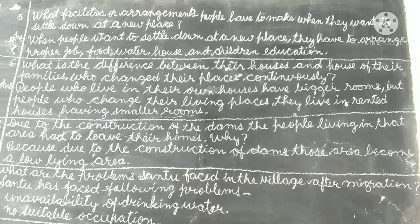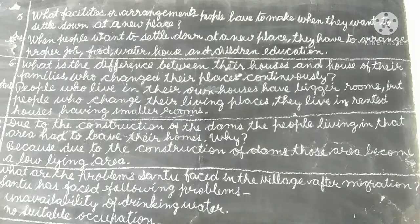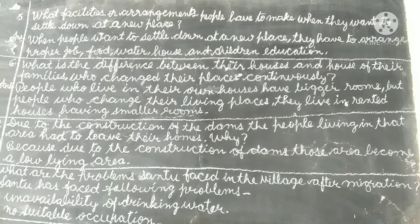Next, question number 5: what facilities or arrangements do people have to make when they want to settle down at a new place? When people want to settle down at a new place, they have to arrange a proper job, food, water, house, and children's education.